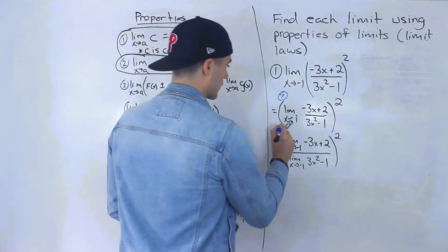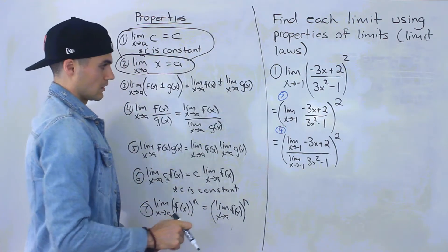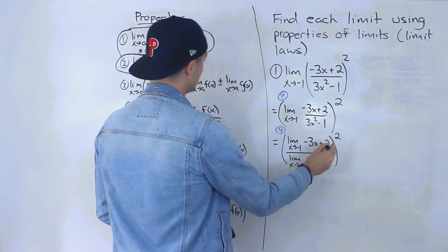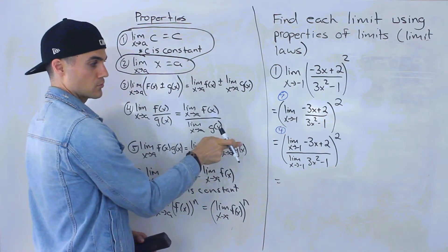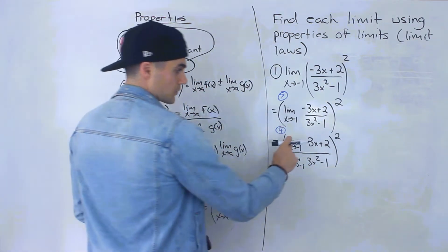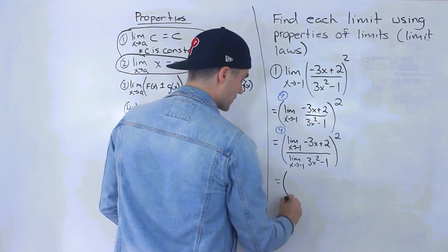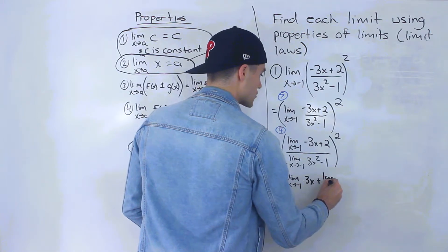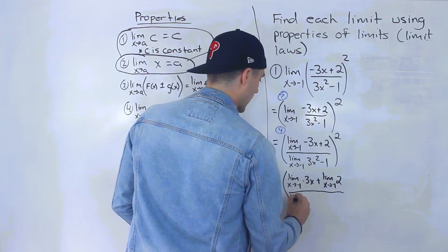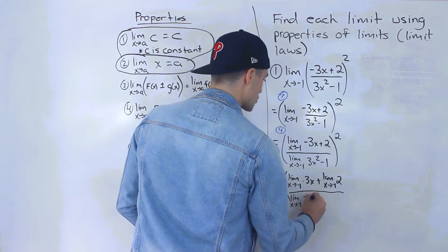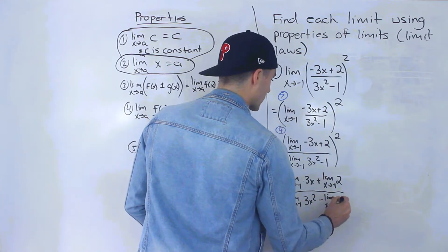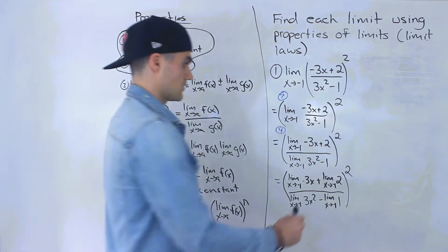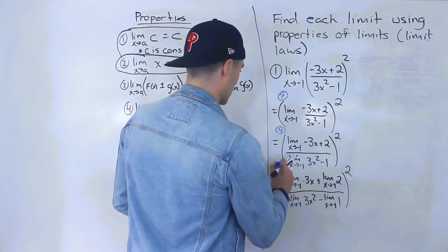We used law number four there. Now we have two limits to work with — one in the numerator, one in the denominator. In the numerator we're adding, and in the denominator we have three x squared minus one. So we apply law number three to both, distributing the limit sign to each term: limit as x approaches negative one of negative three x, plus limit as x approaches negative one of two, all over limit as x approaches negative one of three x squared, minus limit as x approaches negative one of one, close bracket, squared.